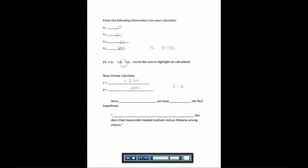So here, our P is less than our alpha. And remember, if P is less than alpha, we always reject the null hypothesis. Now, since we reject the null hypothesis, we support the alternate hypothesis, which was our claim. So we support the claim that insecticide-treated bed nets reduce malaria.